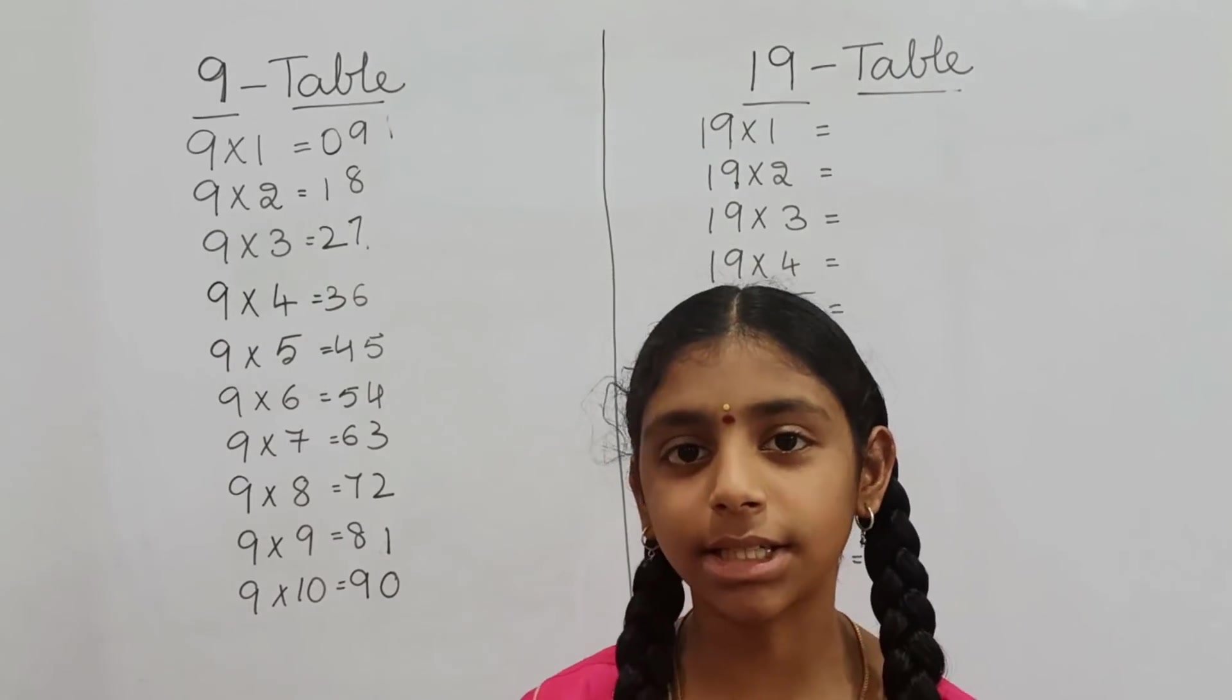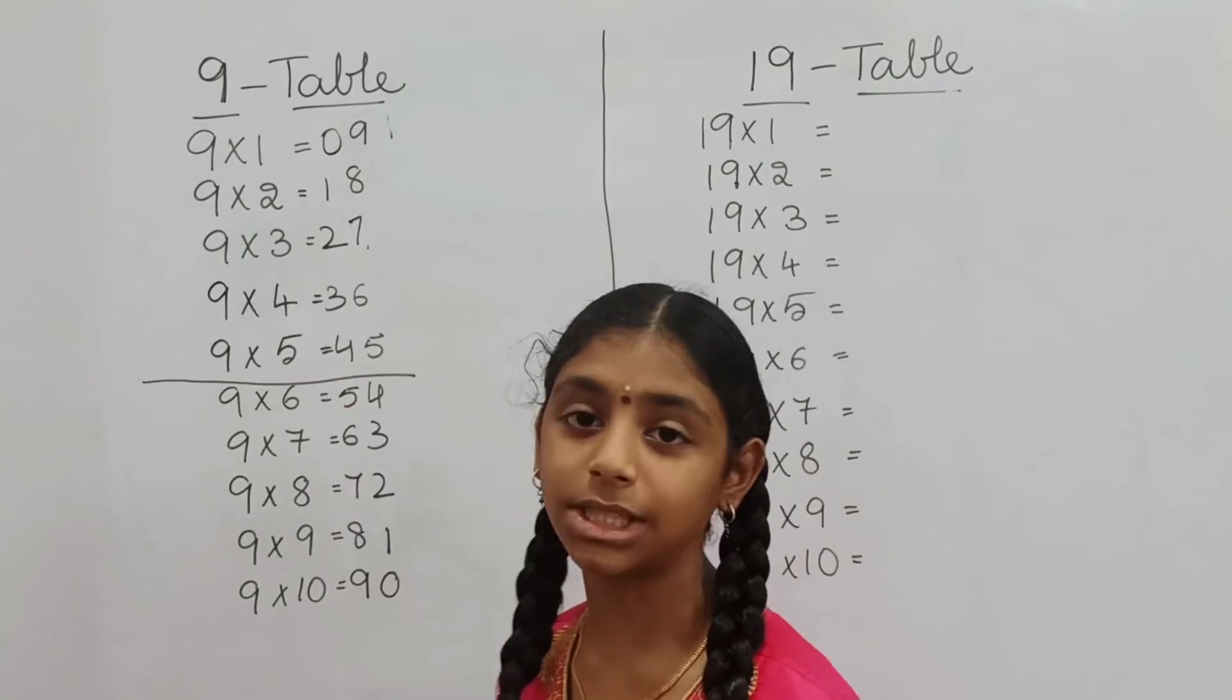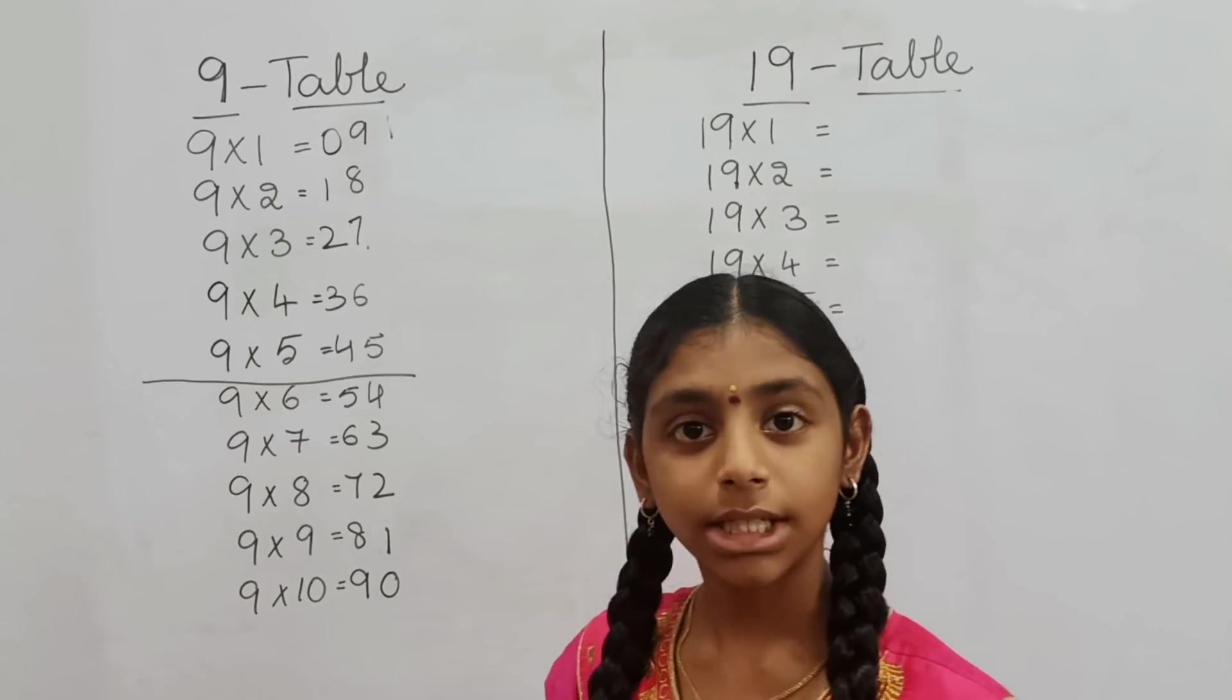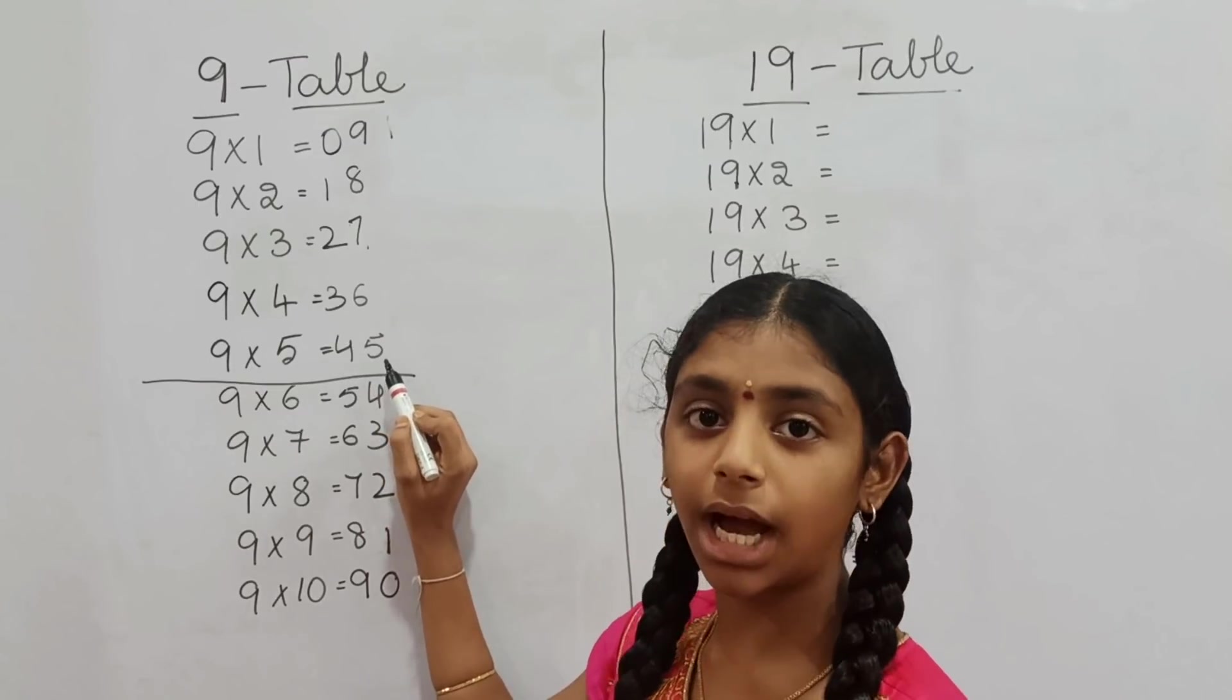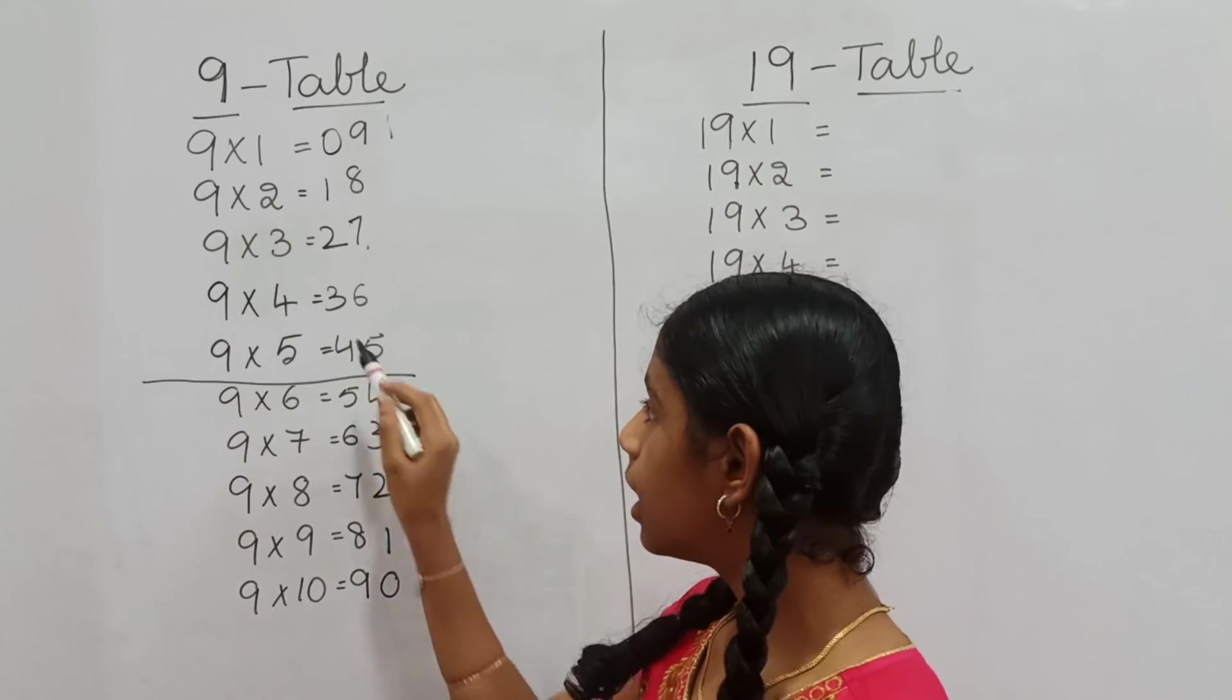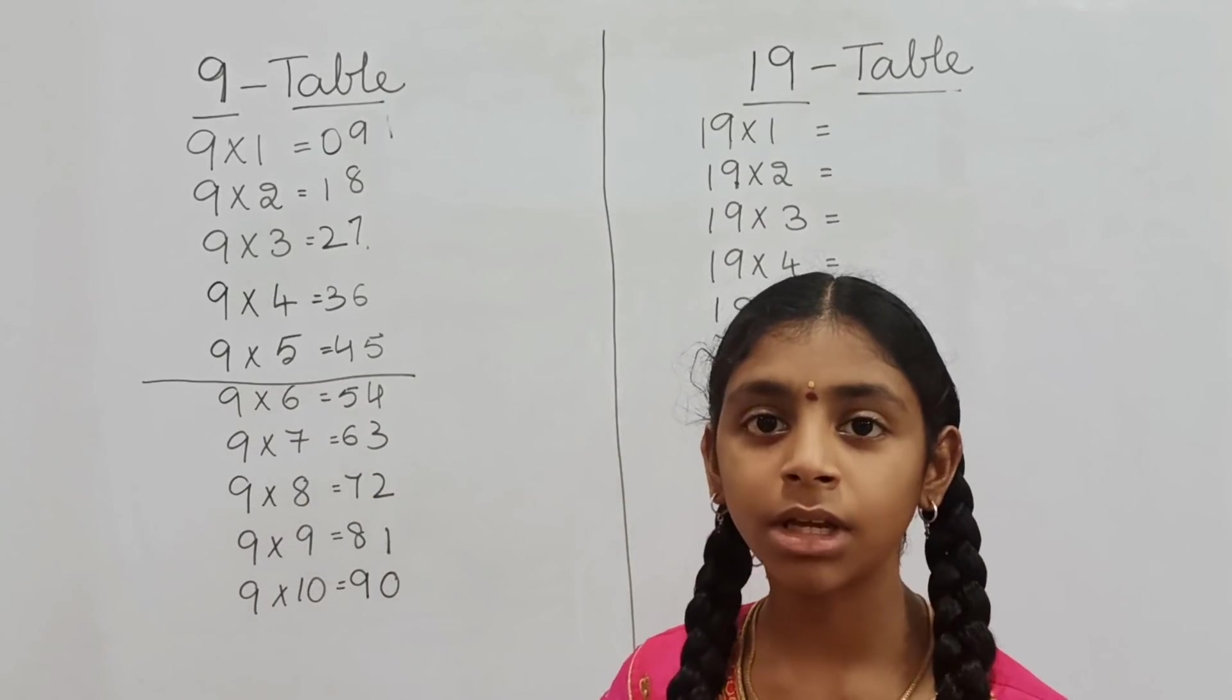Did you observe anything in this 9 table? I have observed. Shall I say? Yes. If you know 9×1 through 9×5, it will become very easy for you all. Shall I say how? 9×5 is 45. Reverse of this number will be the answer of 9×6. Look, 45, 54. Reverse of this number will be answer of 9×7. You can check here.